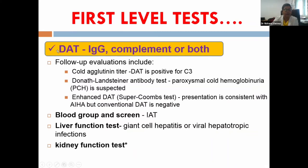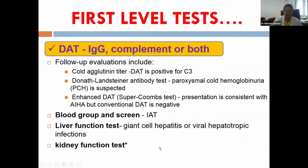The direct antiglobulin test is the gold standard. In warm AIHA it will be positive for IgG, or C3b if complement is also fixed, or both. The test uses a polyspecific serum containing anti-human antibodies against both IgG and C3. When added to the patient's washed RBCs, the anti-human immunoglobulins bind to antibodies or complement on the RBC surface, causing agglutination — a positive Coombs test. Monospecific antisera (anti-IgG and anti-C3 separately) then confirm which is present. Additional tests include blood group screening, liver function tests, and baseline kidney function tests.